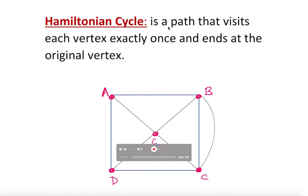A Hamiltonian cycle is a cycle or path that visits each vertex exactly once and ends at the original vertex. By now we know what an edge and a vertex are. If you need clarification, there is a video called 'Traversable Network' where you can find all the explanation about vertices and edges. I'm going to look into this definition as it matches the example here.